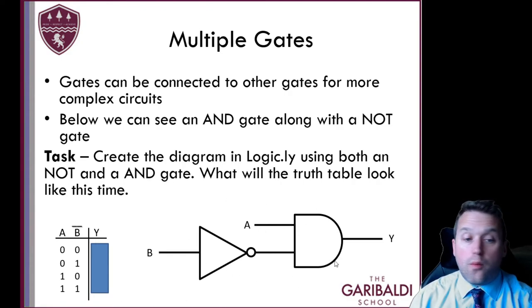So this is the result you should have got. The only time this is coming on is when A is on and B is off, because the NOT will then switch it to on. So they're both on then. So the only case where this gate is going to trigger on is when A is on and B is off.